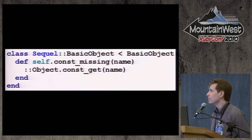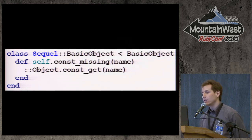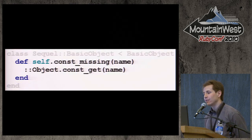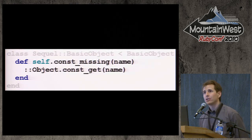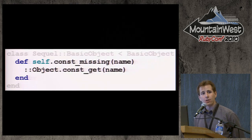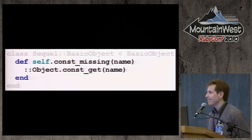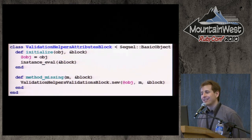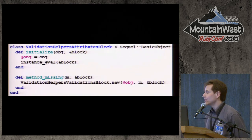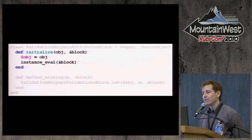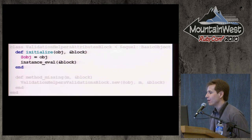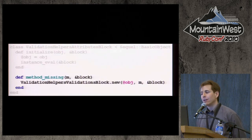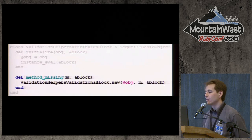To fix constant lookup in BasicObject, you just need to add a const_missing class method to the class that calls ::Object.const_get. Note that you do need to preface the reference to Object with a double colon — otherwise you get a SystemStackError. When I tried this with that double colon, I got a SIGIL and a core dump. Back to the DSL implementation: in initialize, you're keeping a reference to the outer self in an instance variable and then instance-evaluating the block. All method calls in the block are handled by method_missing, which passes the outer self and the method name specifying an attribute along with the block to a new DSL class. method_missing is used here because potentially any method name is valid — you should only use method_missing if any possible method name is valid.